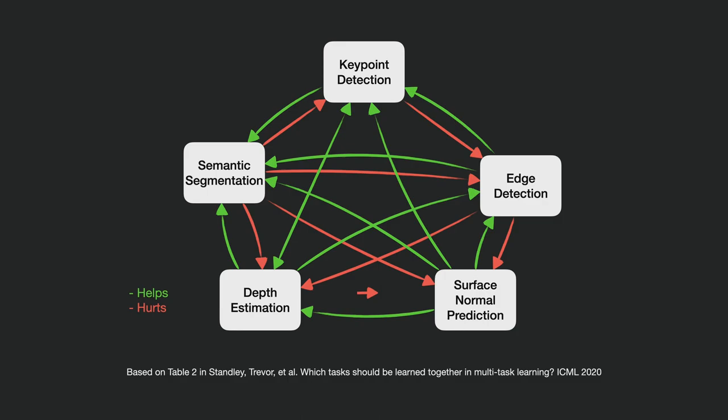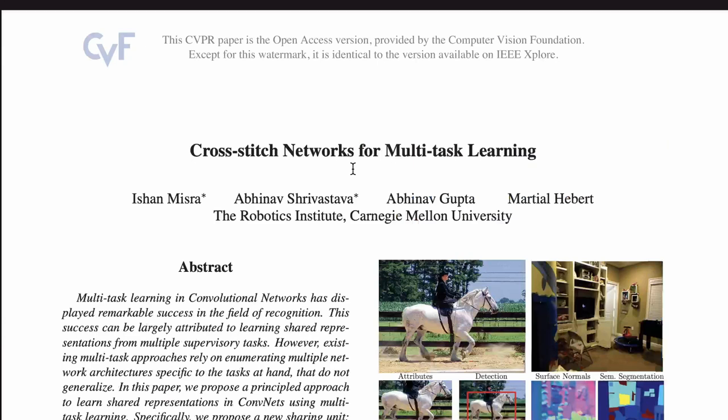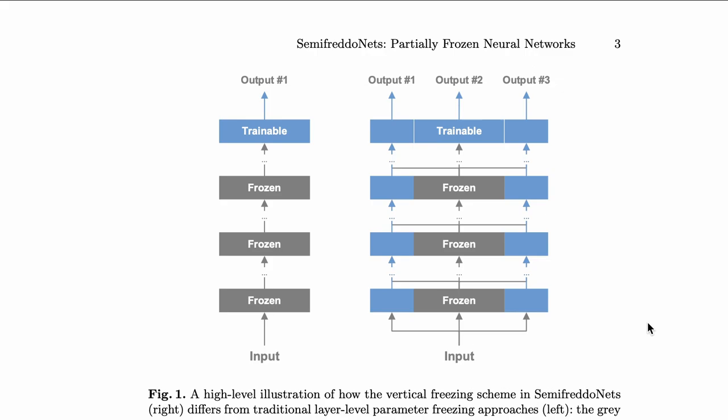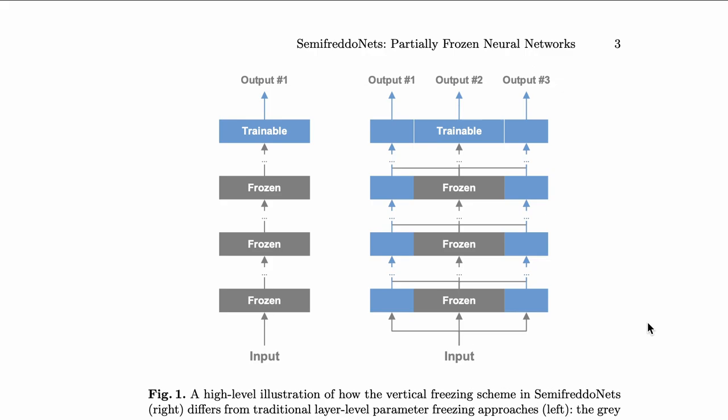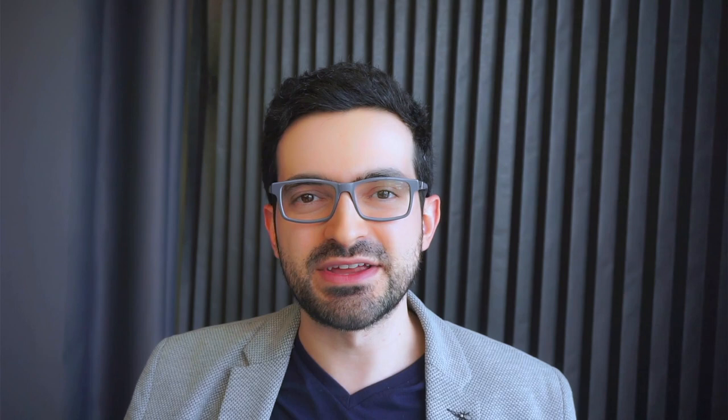Intuitively, the closer the tasks are, the more features they can share — but how close the tasks are may not always be straightforward. Seemingly related tasks can hurt each other's accuracy when trained together, so in practice it takes some trial and error to design a multitask model. We don't have to have hard branching in our architecture. We can also define soft parameter sharing mechanisms, like the cross-stitch networks from CVPR 2016, or semi-fredo nets that I proposed in an ECCV 2020 paper, where how much of the features should be shared is determined by trainable parameters. I'll put the links to the papers in the description.